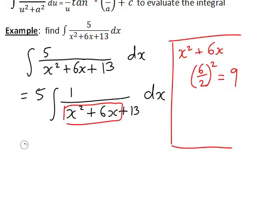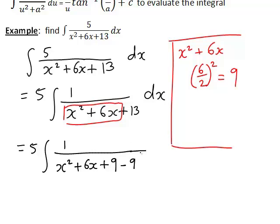If we rewrite this expression and complete the square, that would become x² plus 6x plus 9 to get a perfect square. But if we add 9 to this expression we also need to subtract 9, and the plus 13 on the end carries down to this line.